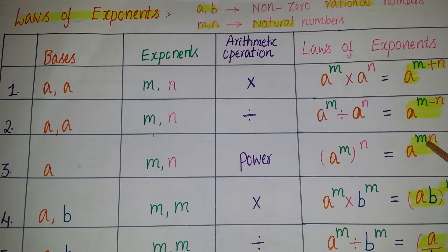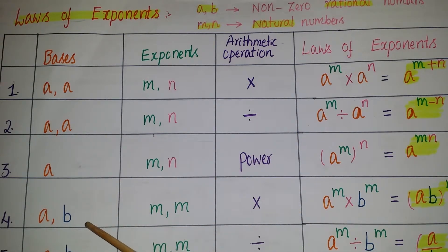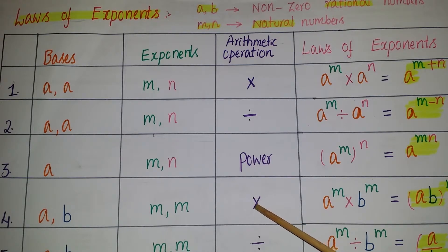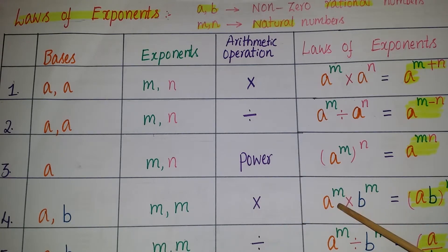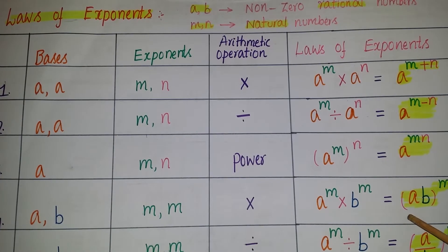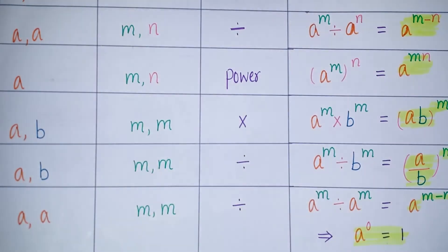The fourth law: if the bases are different (a, b) and the exponents are the same (m, m) and the arithmetic operation is multiplication, then a to the power of m multiplied by b to the power of m is equal to (ab) whole to the power of m. Here we multiply the bases first and then apply the exponent.